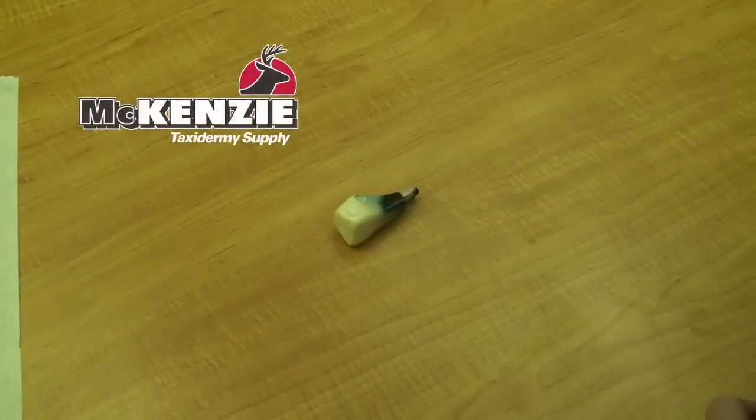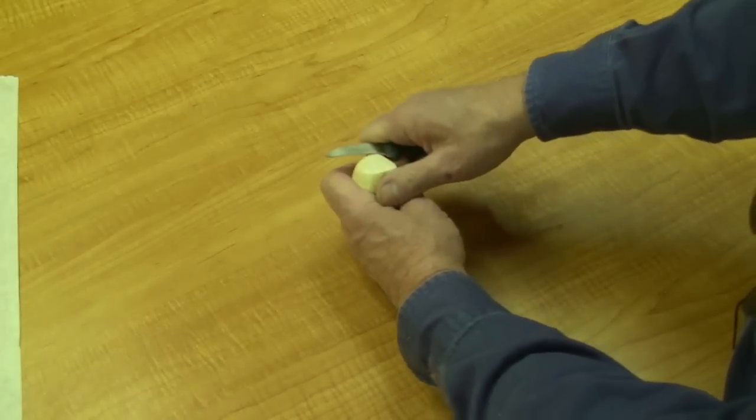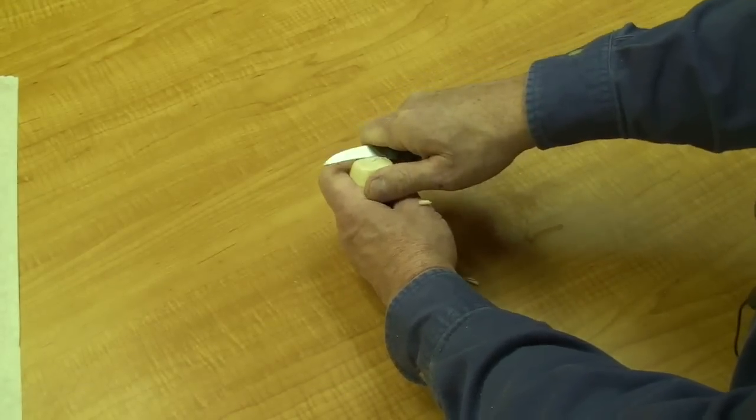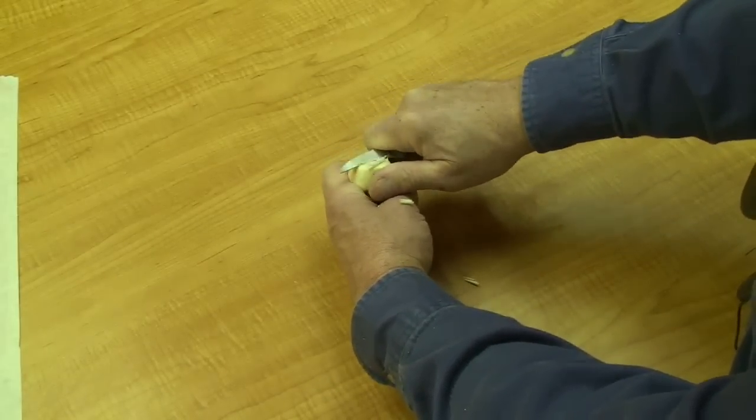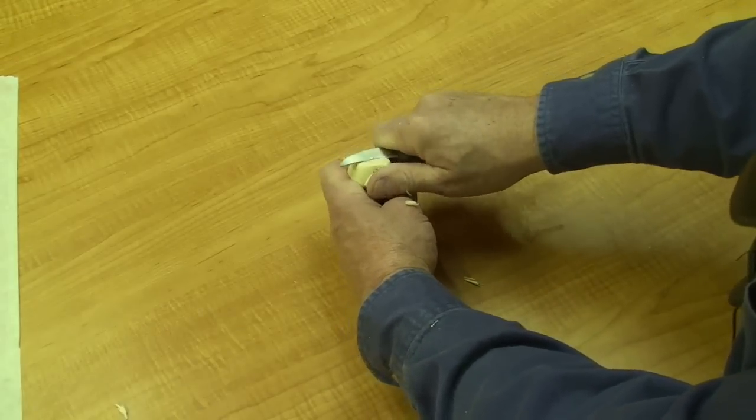In this clip I'm going to show how to prep a duck head prior to putting it in the form and attaching it to the neck. First thing I'll do is rough up the back of the neck here. I'm going to take the knife and just trim some of this away and rough it up where the glue will stick to it.